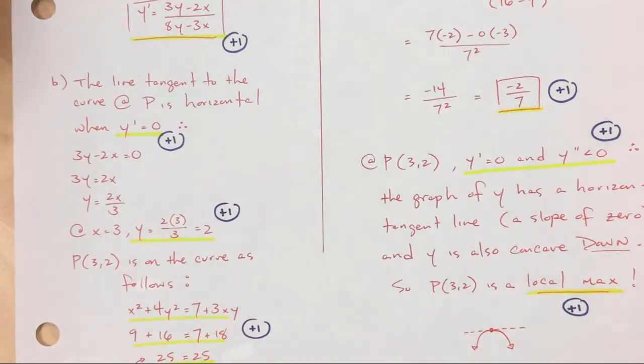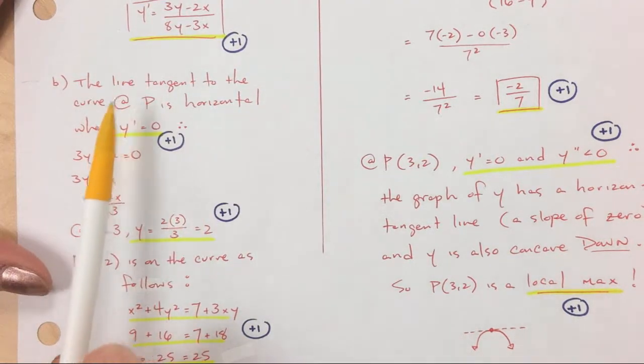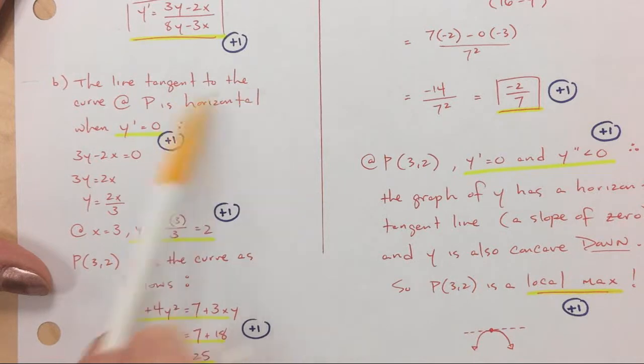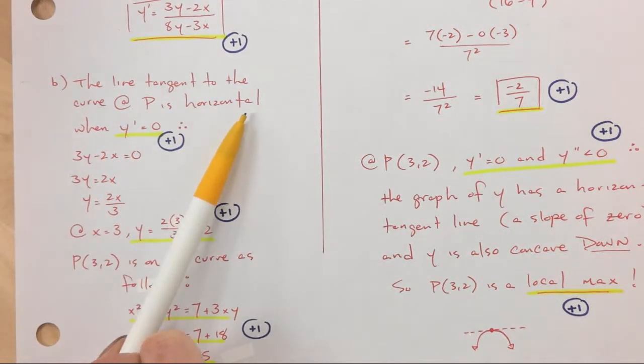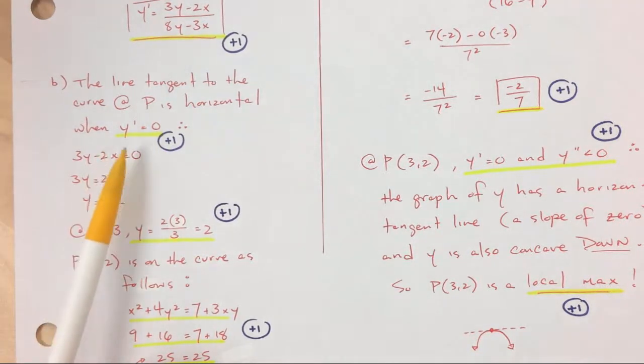But I'm going to write everything out that I know to prove what I'm trying to find. So for B, I wrote first, and I literally copied from the problem. The line tangent to the curve at P is horizontal, and I think about it for a second, when the derivative equals zero, because the derivative is the slope at that point. So horizontal means zero slope.